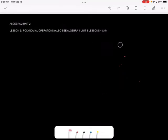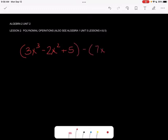Let's say that we have 3x cubed minus 2x squared plus 5, minus 7x squared minus x plus 1.